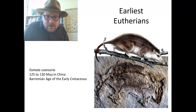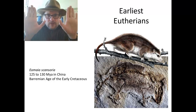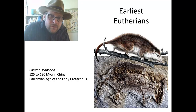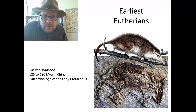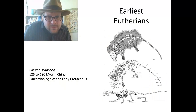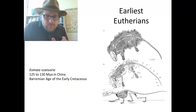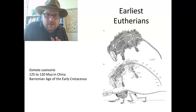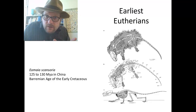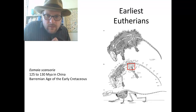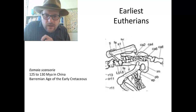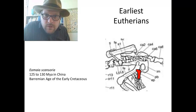Eomaia scansoria is 125 to 130 million years old, discovered in China. They split apart the rock and found two sides of this little fossil from the early Cretaceous. It's a very complete skeleton — an exceptional fossil. When we look for the epipubic bone, there it is — Eomaia has an epipubic bone, just like a marsupial.